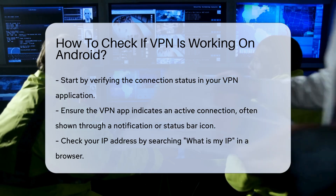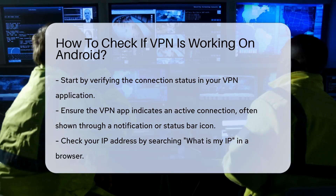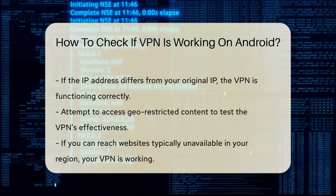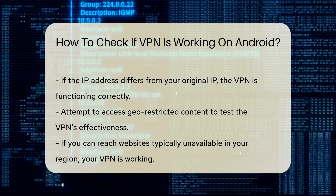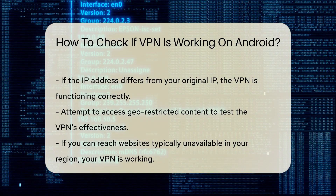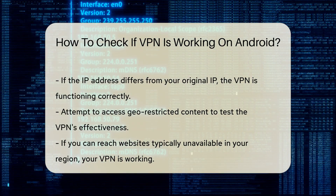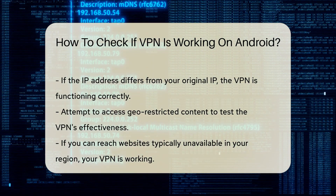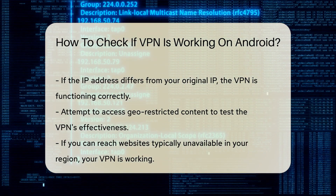Next, check your IP address. You can do this by searching 'what is my IP' in a browser. If your VPN is working, the displayed IP address should differ from your original IP before connecting to the VPN. This indicates that your internet traffic is being routed through the VPN server.